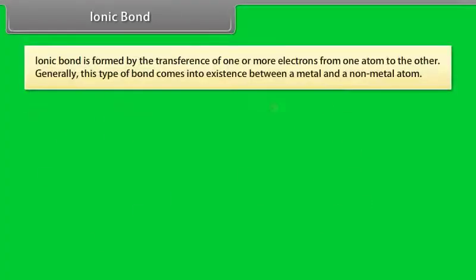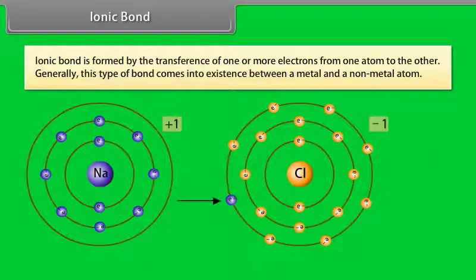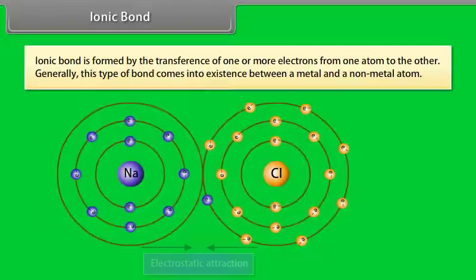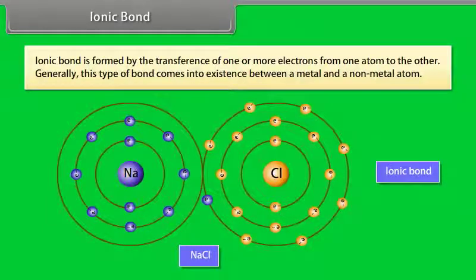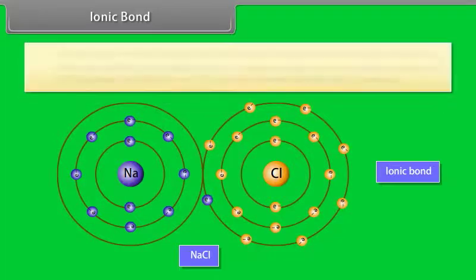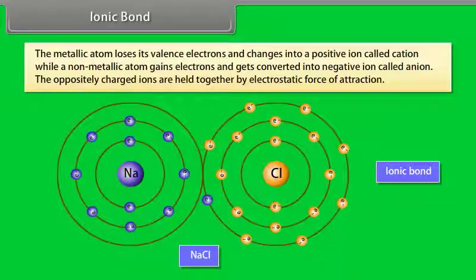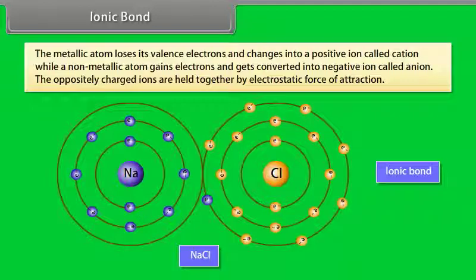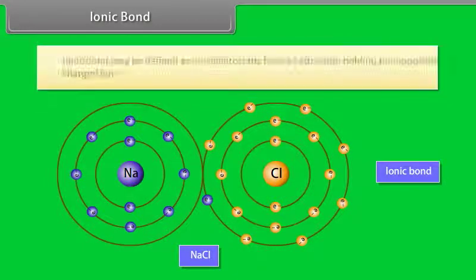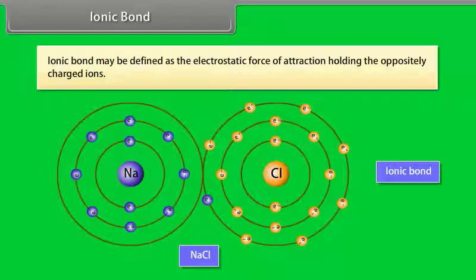Ionic Bond. An ionic bond is formed by the transference of one or more electrons from one atom to another. Generally, this type of bond comes into existence between a metal and a non-metal atom. The metallic atom loses its valency electrons and becomes a positive ion called a cation, while the non-metallic atom gains electrons and becomes a negative ion called an anion. The oppositely charged ions are held together by electrostatic force of attraction. An ionic bond may be defined as the electrostatic force of attraction holding the oppositely charged ions.